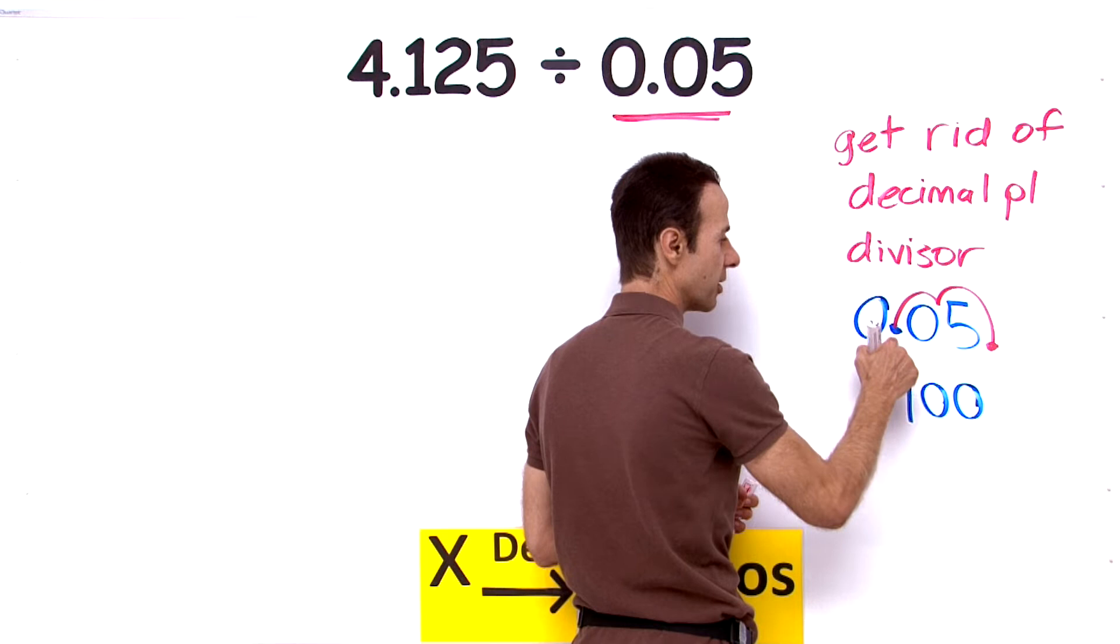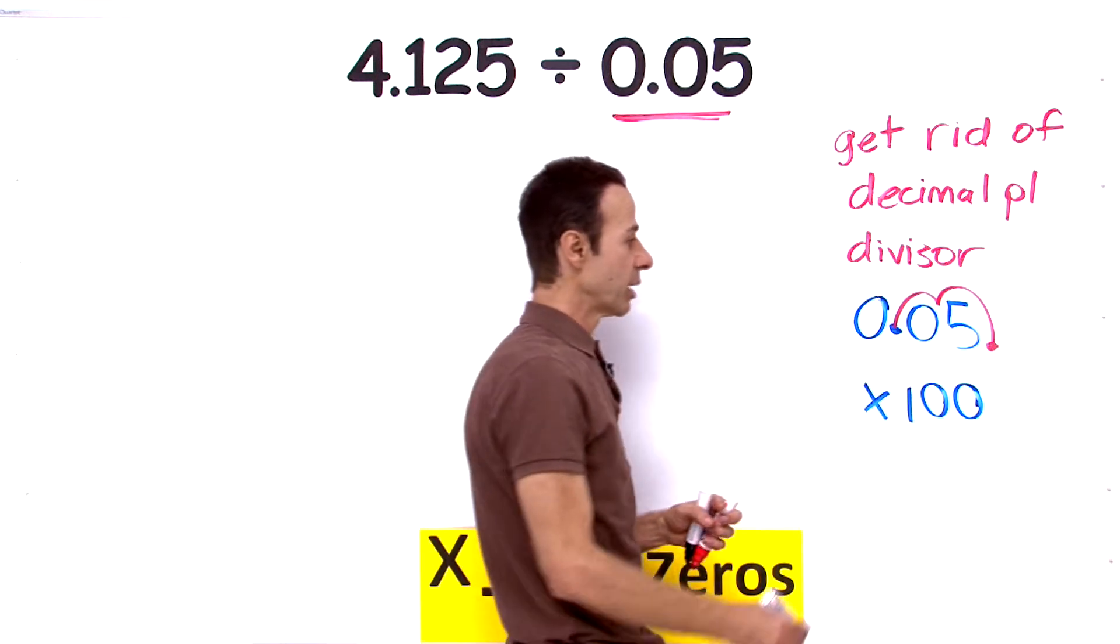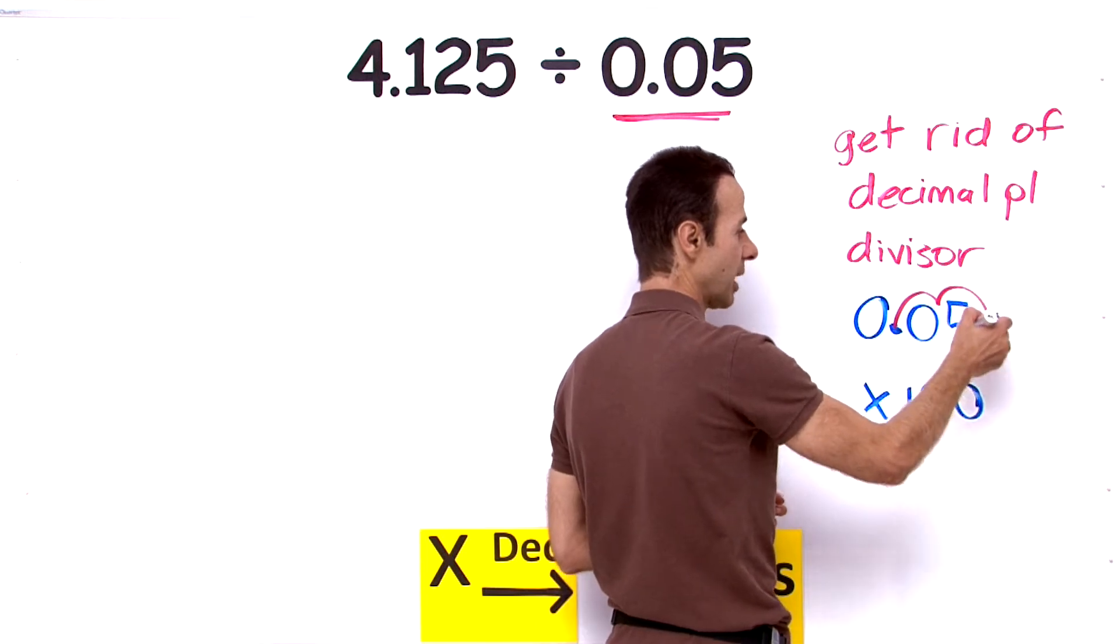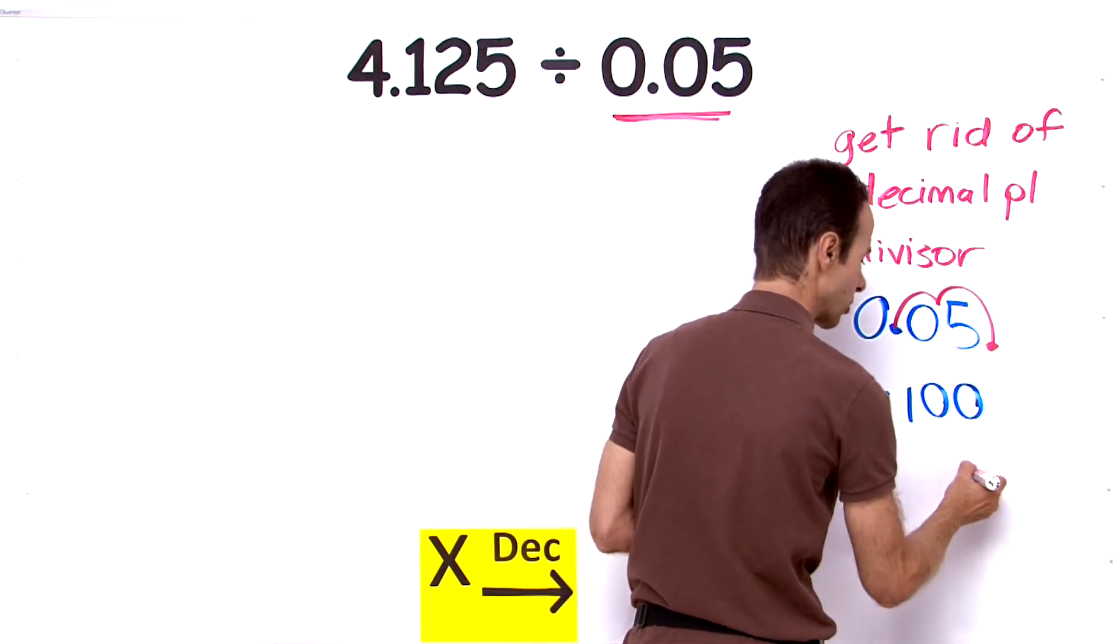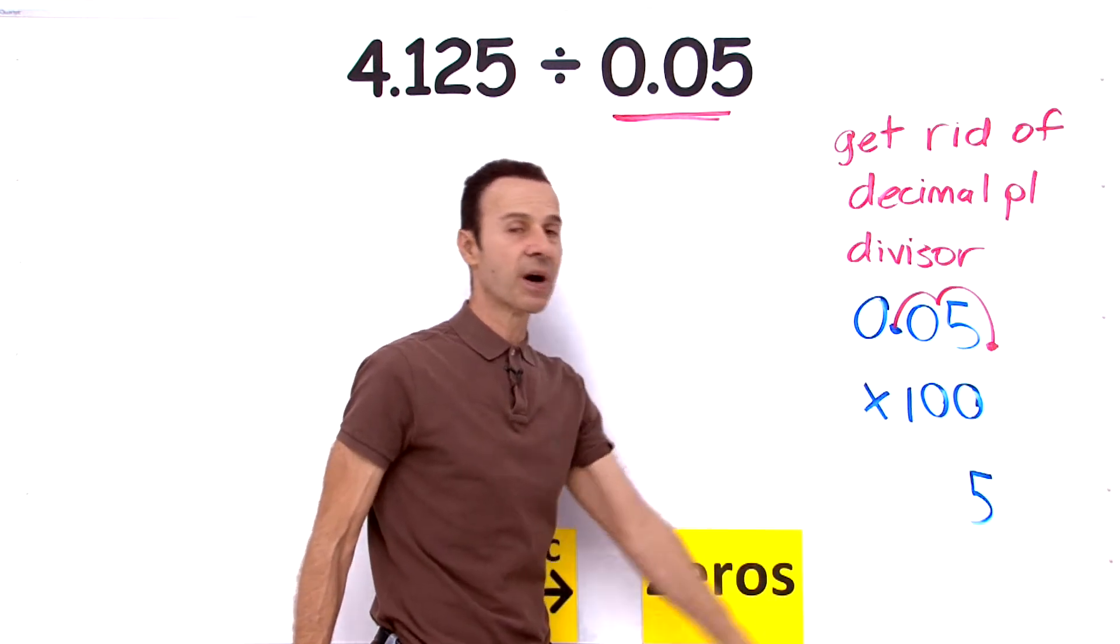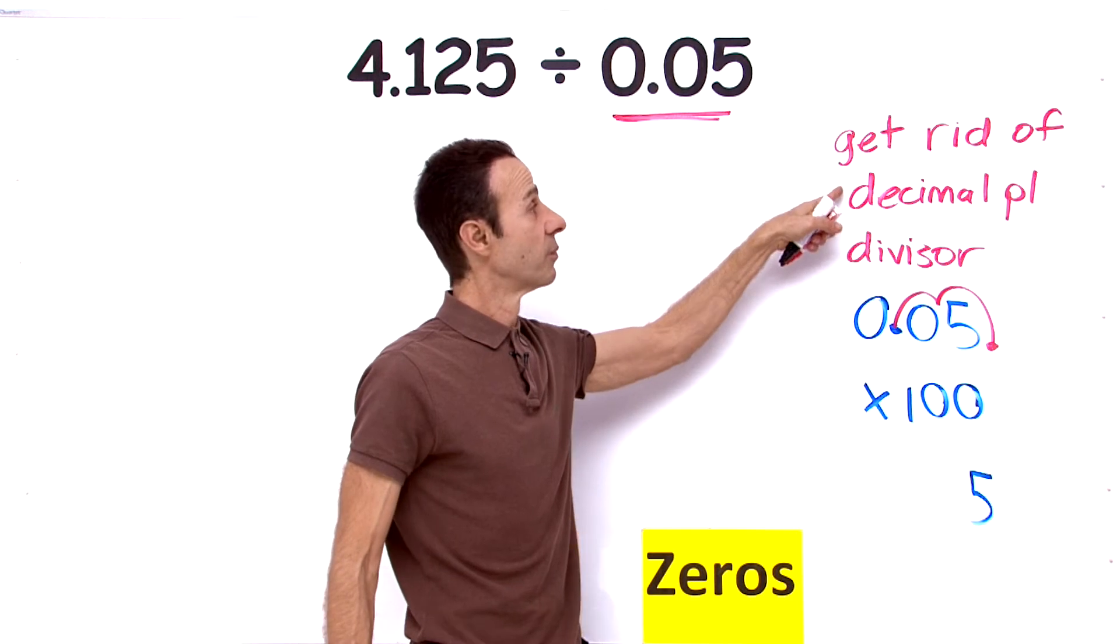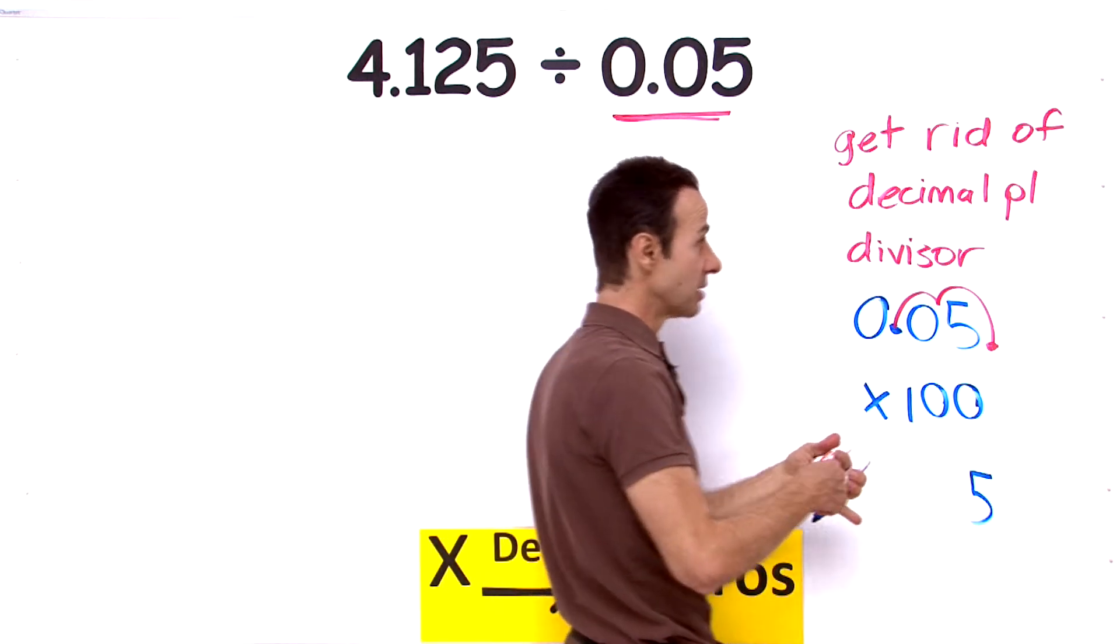If I multiply this number 0.05 by 100, it will move the decimal place one, two, and that will become 5. So the answer will be 5. 0.05 times 100 is 5. So we have eliminated the decimal point.